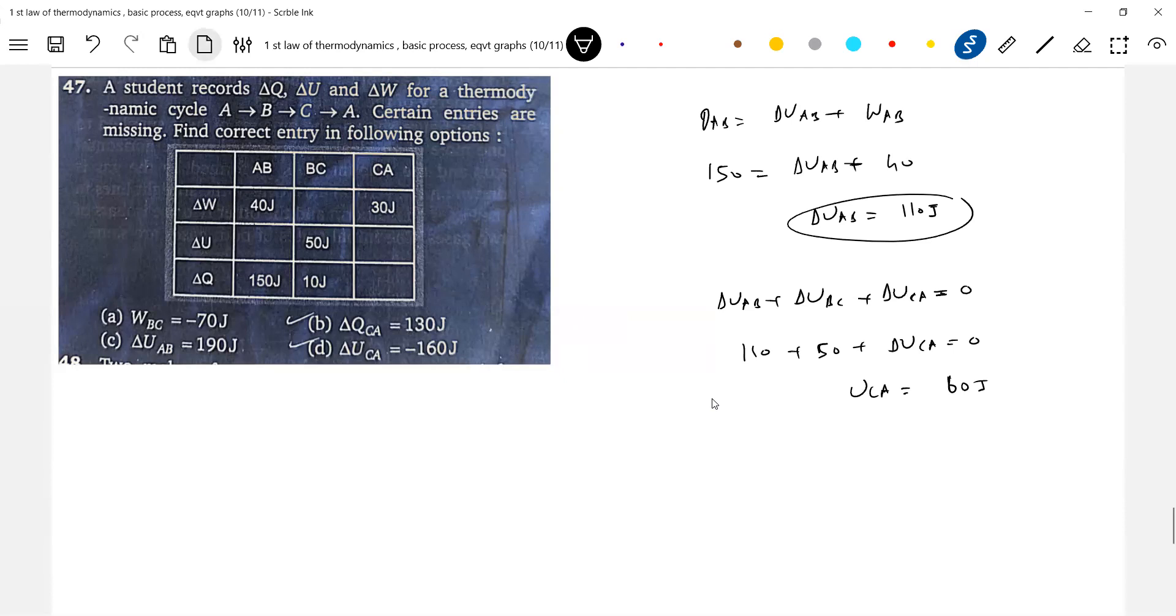Now come for this one. I got ΔU_CA, so can we go for ΔQ_CA? Sir, we need to add 110 and 115 also. Yes sir, it will be minus 116, minus 160.